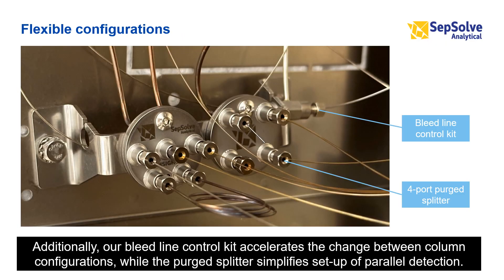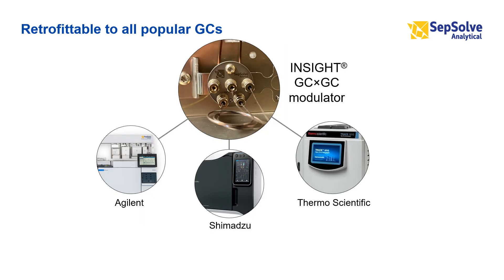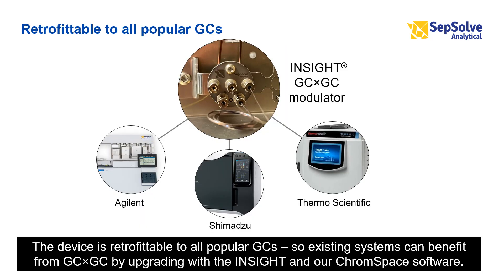Additionally, our bleedline control kit accelerates the change between column configurations, while the paired splitter simplifies setup of parallel detection. The device is retrofittable to all popular GCs, so existing systems can benefit from GC×GC by upgrading with the InSight and our Chromes-based software.